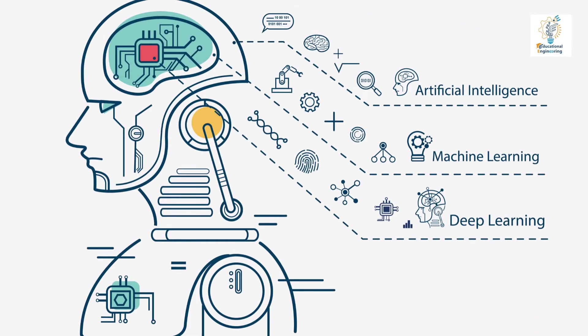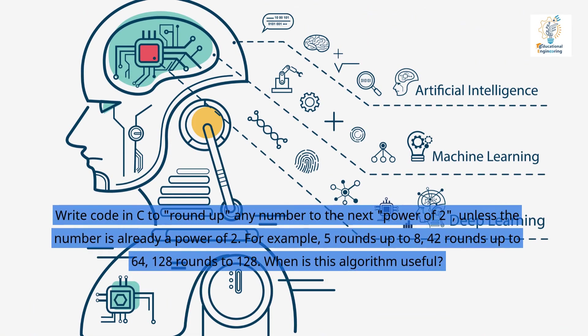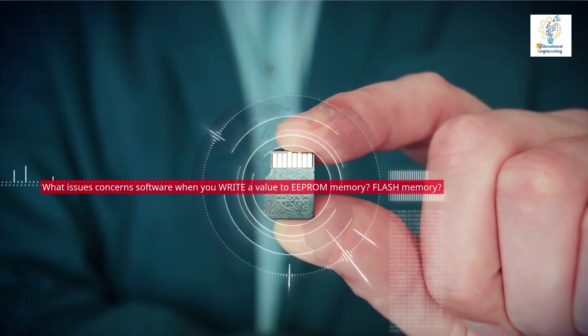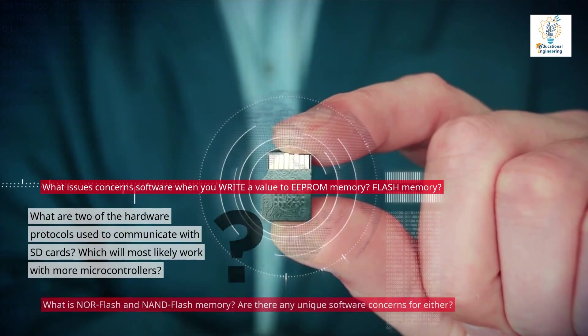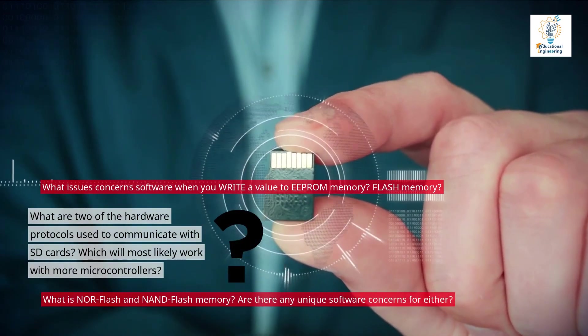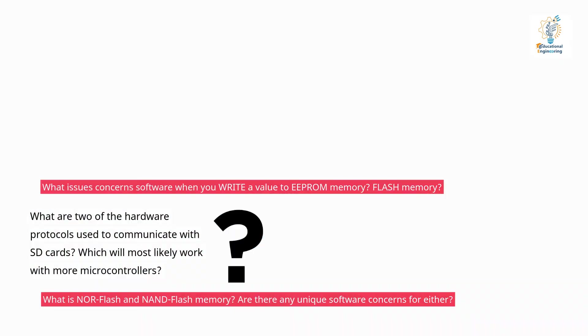Write code in C to round up any number to the next power of 2, unless the number is already a power of 2. For example, 5 rounds up to 8, 42 rounds up to 64, 128 rounds to 128. When is this algorithm useful? What issues concern software when you write a value to EEPROM memory? Flash memory? What are two of the hardware protocols used to communicate with SD cards? Which will most likely work with more microcontrollers? What is NOR flash and NAND flash memory? Are there any unique software concerns for either?